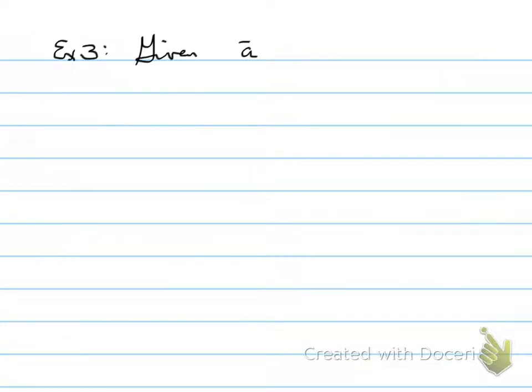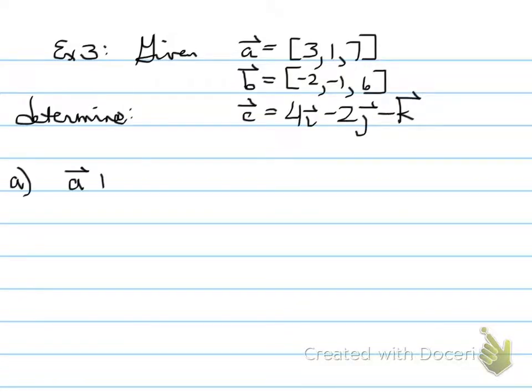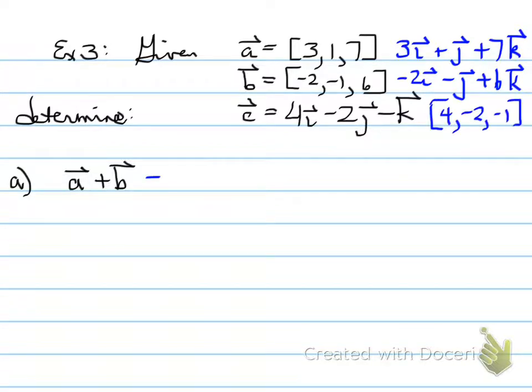Let's look at the next problem. Example number 3. If I'm giving you different vectors, such as a, b, and c, determine the following values. Remember that a is known as 3i + j + 7k, and b is -2i - j + 6k. Or you can rewrite c in component form. So whether you like to use the i, j, and k vectors, the unit vectors, or you write them in component form, you will get the same answer. So for vector a + vector b, I take all the i's in a and b and add them together, and the j's, and the k's.